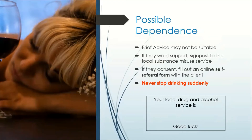If you identify in the AUDIT tool, or just through your own clinical assessment, that someone has possible dependence on alcohol, brief advice is usually not suitable. If they want support, you should signpost them to their local substance misuse service. If they consent, what I often do is fill out an online self-referral form with the client. This usually involves submitting some personal details like a phone number, address and name, and then the substance misuse service will usually call them back the following day or within a few days.